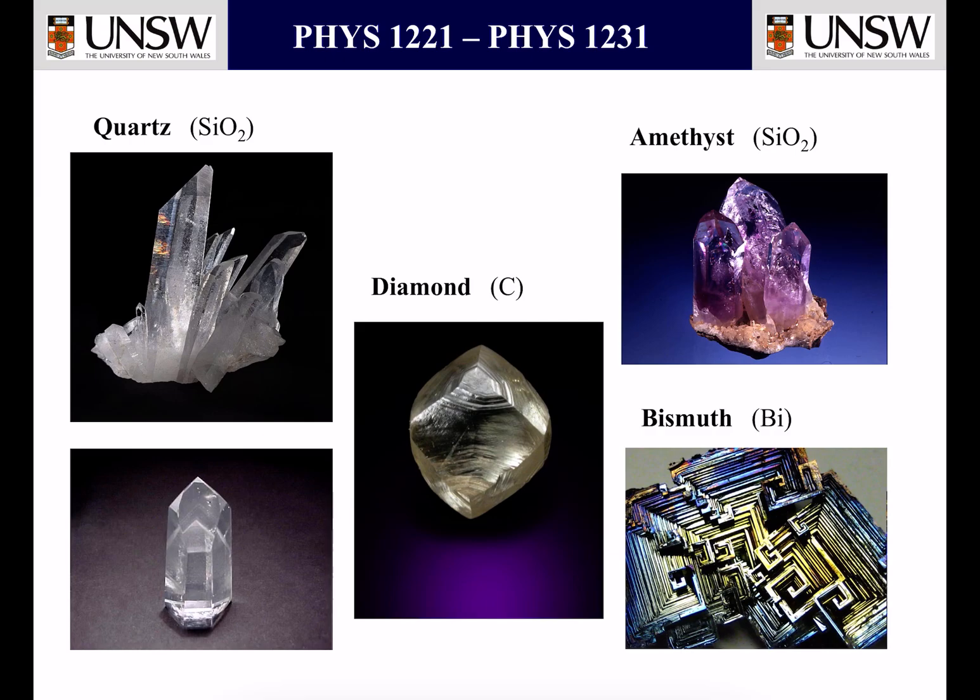Bismuth is funny as it looks like a cubic structure. However, one of the 90 degree angles is a bit larger — it's 92 degrees. This is a rare case in nature, and in order to compensate for that 92 degree angle rather than 90 degrees, the crystal grows in the form of a spiral to compensate for that tiny difference in angle. This is nicely shown here for bismuth. So these are natural crystals.